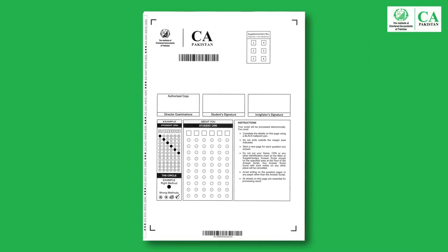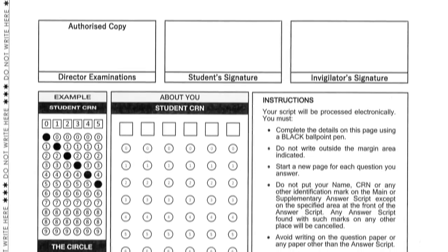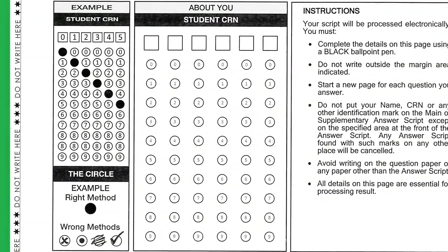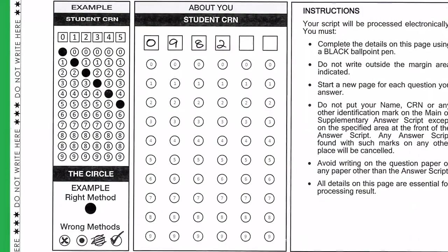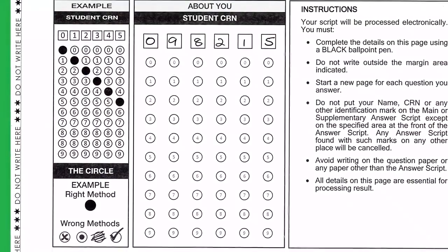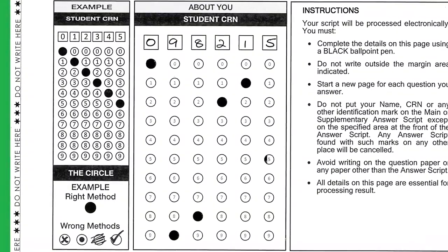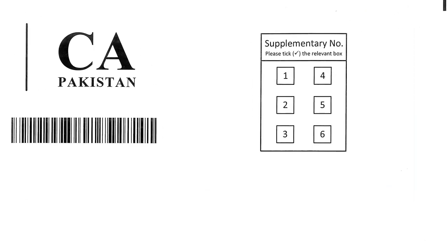Here is the front page of the supplementary answer script. You will fill in the details on this page in the same manner as you did in the main answer script. Whenever you take a supplementary answer script, immediately write your CRN in the designated space and shade the machine readable circles for the CRN in the same manner as you did in the main answer script. Adjacent to the ICAP logo there is a box with six sub-boxes for mentioning the supplementary answer script number.